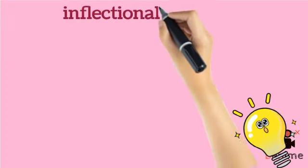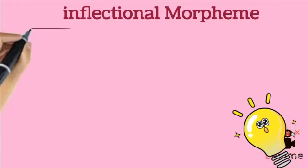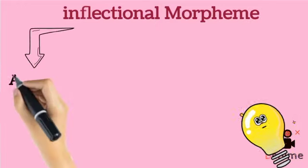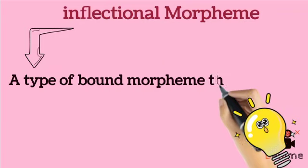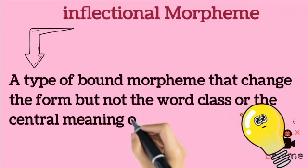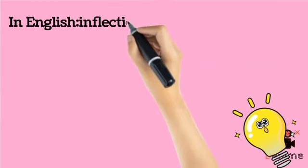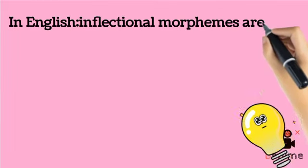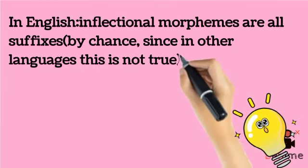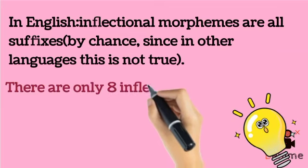Another question is the definition of inflectional morpheme. An inflectional morpheme is defined as a type of bound morpheme that changes the form but not the word class or the central meaning of the word. In English, inflectional morphemes are all suffixes, though in other languages this is not true.